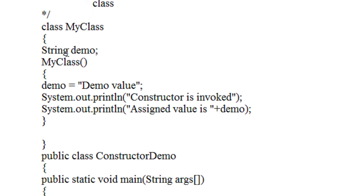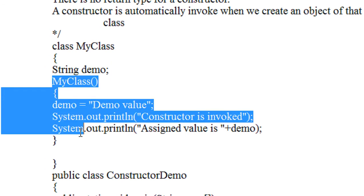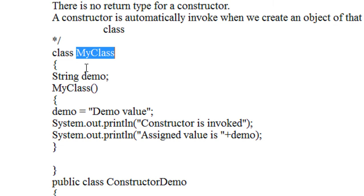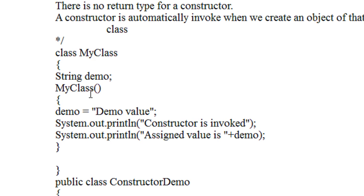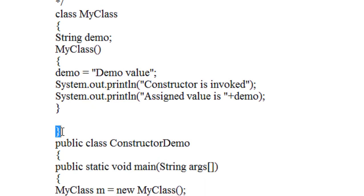Let's take a closer look at this program. The name of the class is MyClass, which contains a string variable. Here is the constructor — the name of the class is the same as the name of the constructor. It is similar to a normal class method, except the method name must be the same as the class name, and there is no return type because it is a constructor. Inside, I initialize the string variable and print the assigned value.